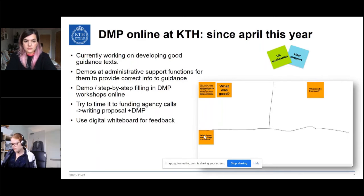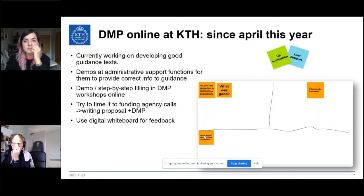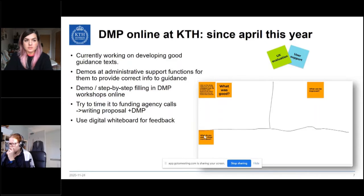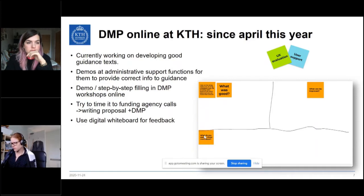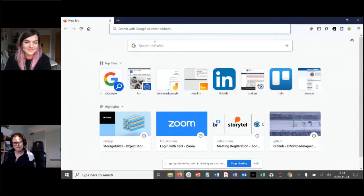What we're doing right now is providing good guidance texts in the DMP Online tool that are specific to KTH. We've also shown the DMP to many administrative support functions like the research support office and legal teams, which has enabled them to provide correct information for the guidance. We also try to time our workshops in connection to funding agency calls, because that's when researchers tend to be motivated to do a DMP.